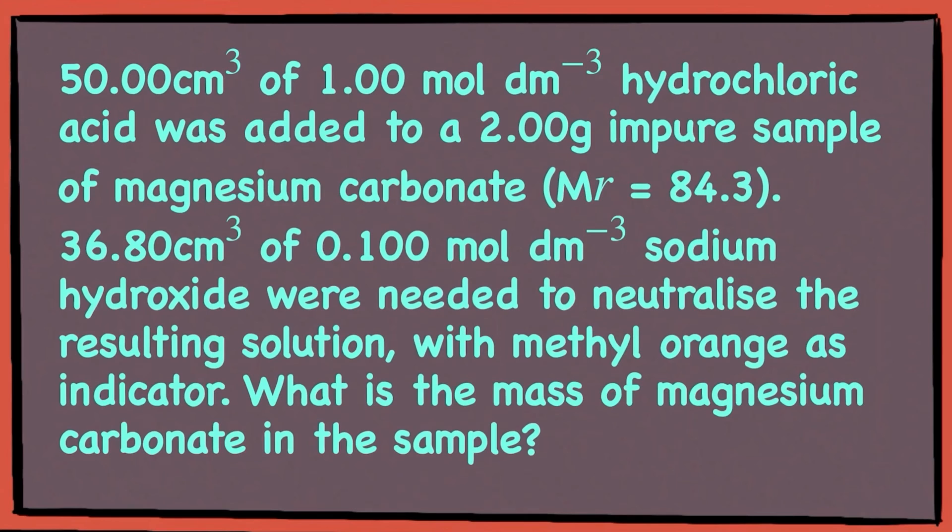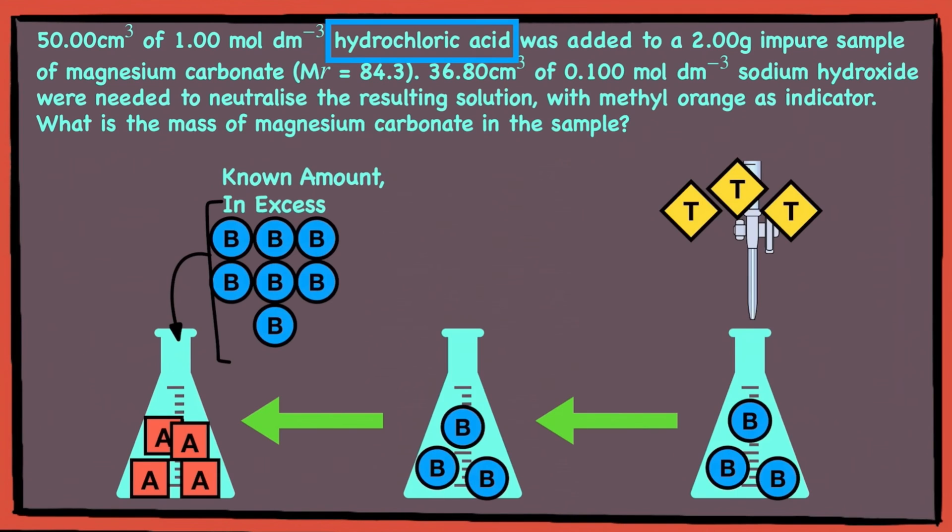Now let's take a look at this example. Feel free to pause the video right now to read the question. Firstly, we must identify what are the A, B, and T in this question. So remember, B is the substance which has the exact amount added in excess. In this case, it is the hydrochloric acid.